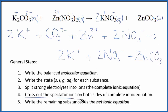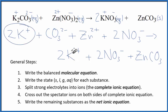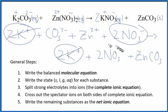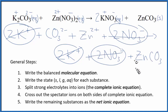Now we can cross out the spectator ions — they're on both sides of our complete ionic equation. They haven't changed, so we're not really interested in them. We can see 2K⁺ in the reactants and in the products — let's get rid of that. Here we have two nitrate ions in the reactants and two nitrate ions in the products — get rid of that. What's left is the net ionic equation for K₂CO₃ plus Zn(NO₃)₂. We'll clean it up and write the states in.